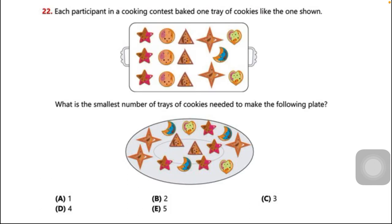Moving to the solution: we are going to match different types of cookies on the plate to the tray. The four-arm star cookie — I have cut one on the plate and taken it from the tray. The second four-arm star cookie is also cut from the tray. So these two four-arm star cookies have been taken from the tray.